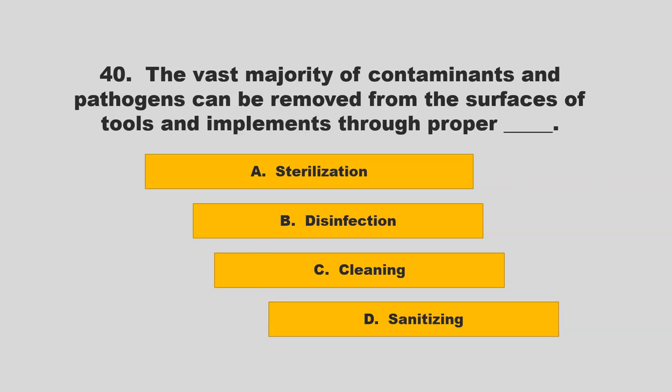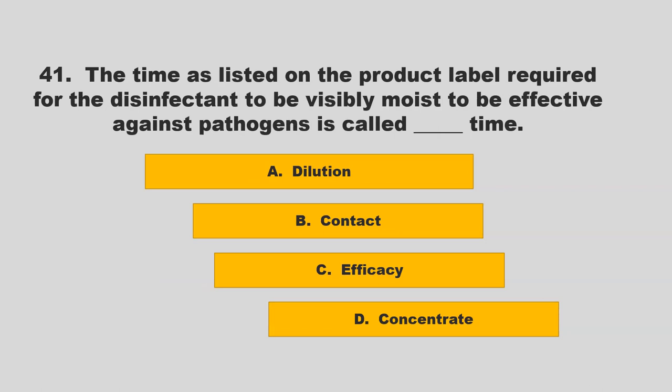The vast majority of contaminants and pathogens can be removed from the surfaces of tools and implements through proper blank. Options: sterilization, disinfection, cleaning, or sanitizing. The correct answer is C: cleaning.